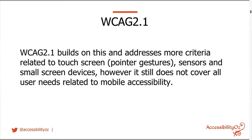WCAG 2.1 definitely builds on this and addresses more criteria related to touch screens, such as pointer gestures and sensors and small screen devices. However, it still doesn't cover all the user needs related to mobile accessibility. Prior to 2.1 being released in 2018, it was like the wild, wild west when it came to mobile accessibility — every single accessibility company had their own mobile accessibility guidelines. And every single one required touch target size. When it came to WCAG 2.1, they did have a touch target size requirement, but they'd relegated it to level AAA, which is not required by any government or policy organisation. As I like to say, AAA is where success criteria go to die.